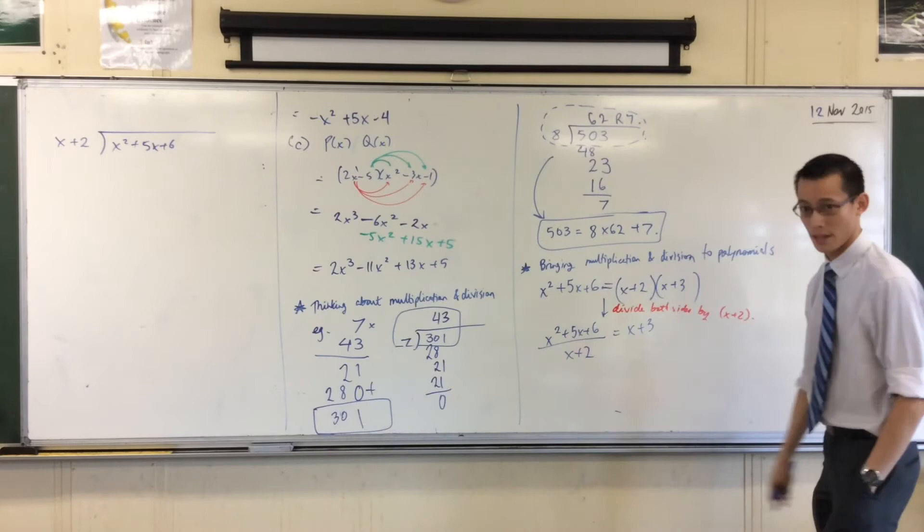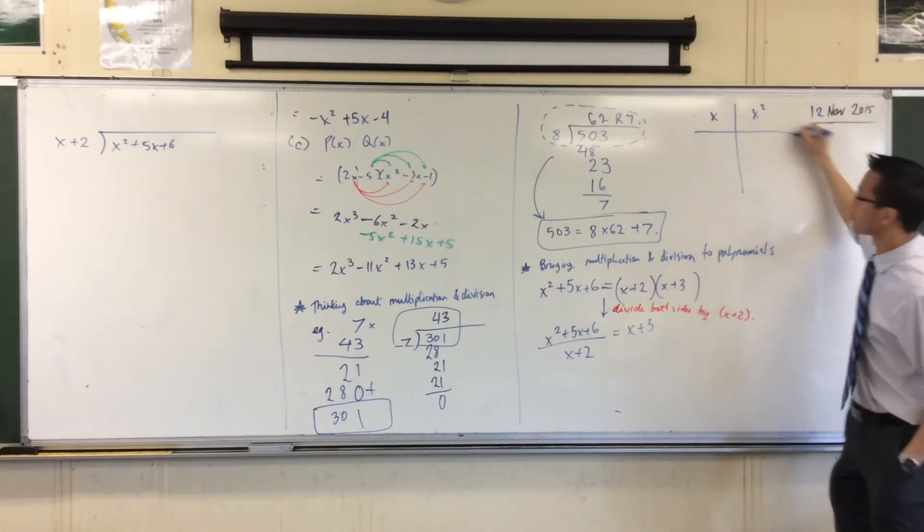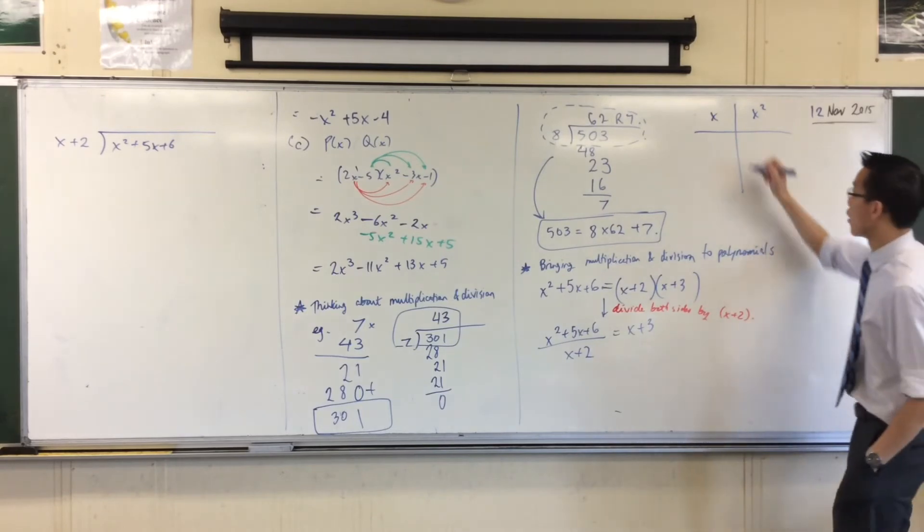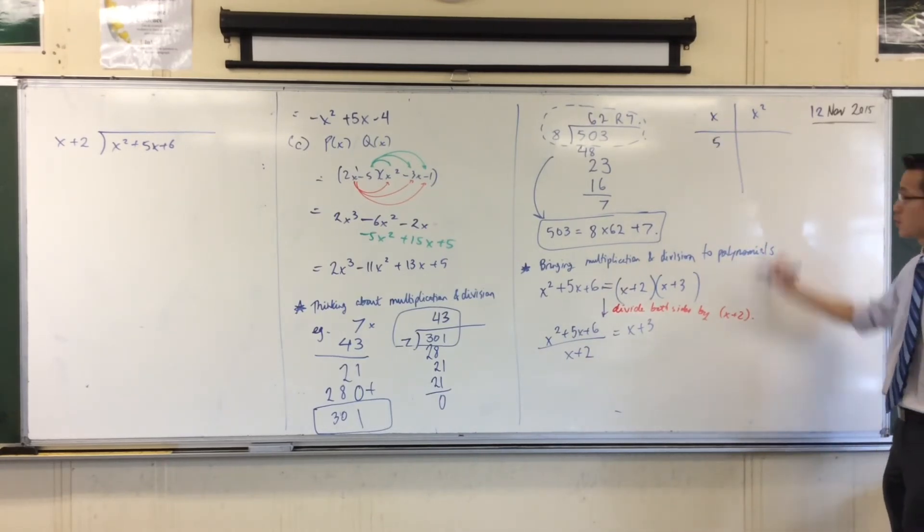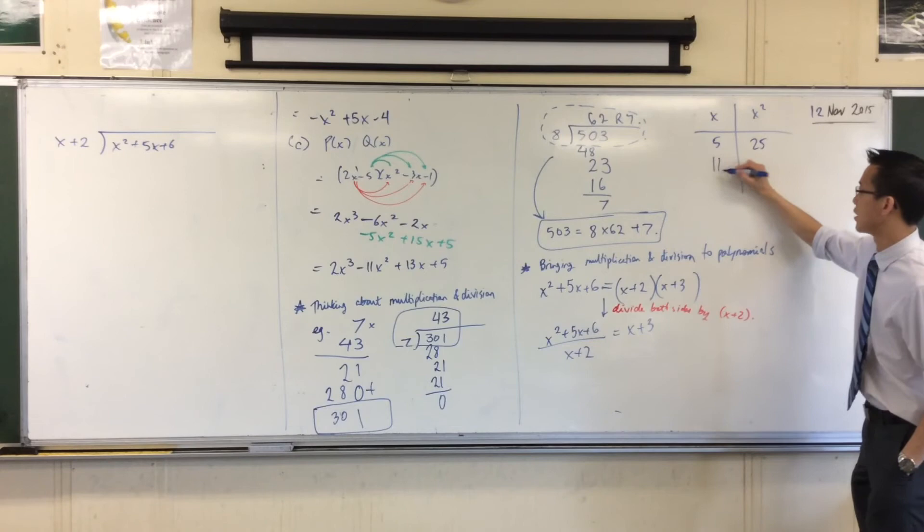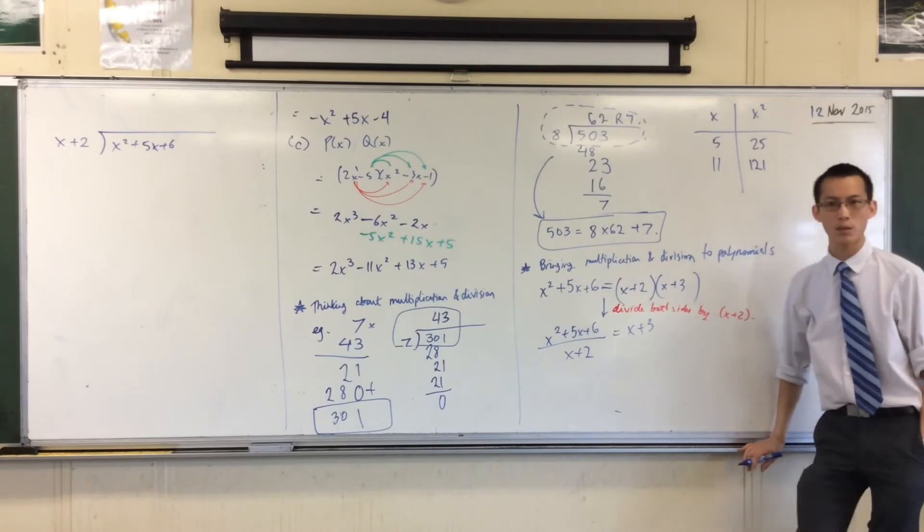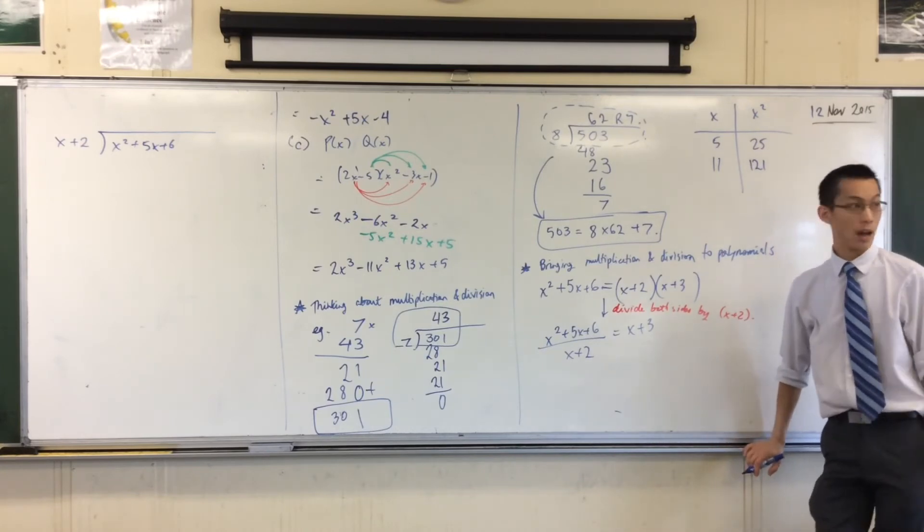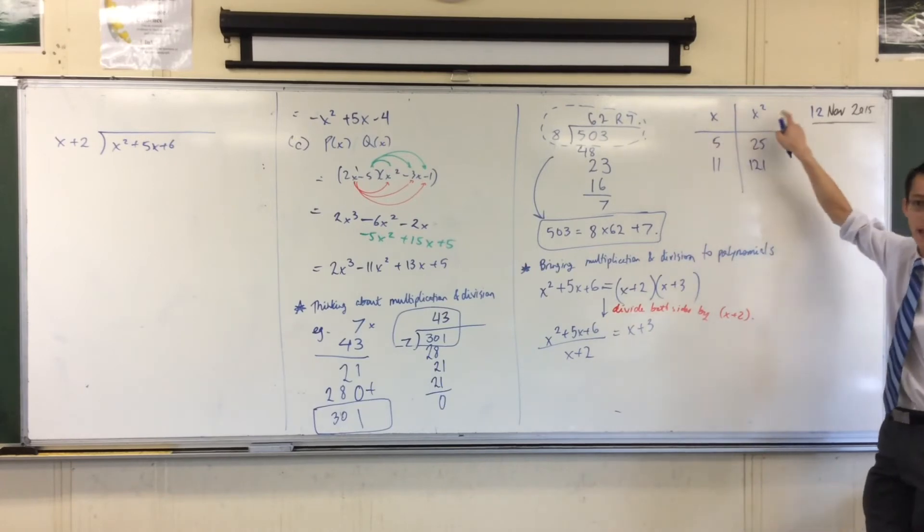So when I asked how many 7s fit into 30, what corresponds to that over here is how many x's fit into x squared? Now, let me just do this with some actual numbers. For example, here's x and here's x squared. A number like, say, if x was equal to 5, what's x squared? 25. So how many 5s are there in 25? There are 5. How about a number like, say, 11? What's 11 squared? 121. How many 11s fit into 121? 11.